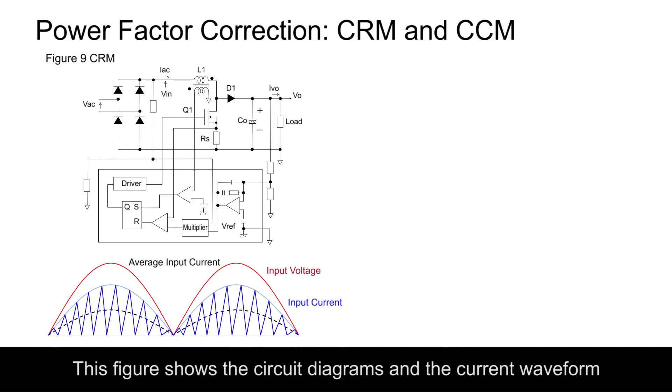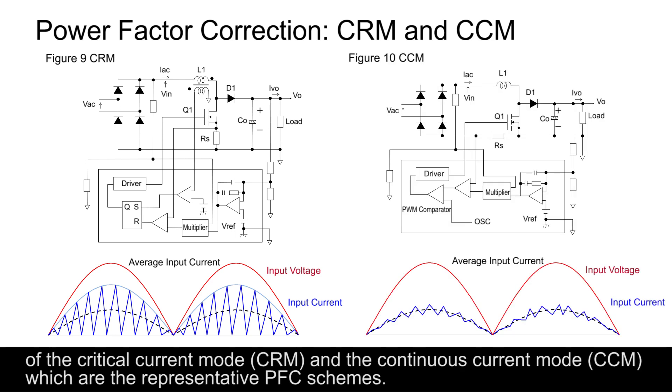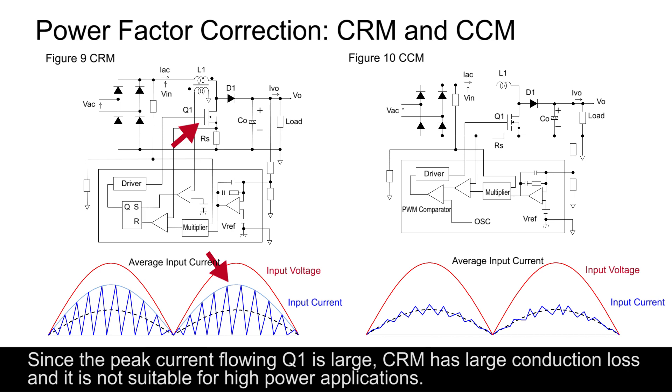This figure shows the circuit diagrams and the current waveform of the critical current mode CRM and the continuous current mode CCM, which are the representative PFC schemes. Since the current flowing Q1 is large, CRM has large conduction loss and it is not suitable for high power applications.